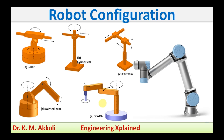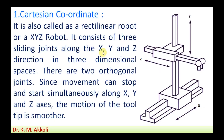First, I will explain the cartesian coordinate configuration. It is also called a rectilinear robot or XYZ robot. It consists of three sliding joints along the X, Y, and Z directions in three-dimensional space.